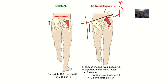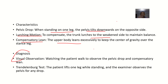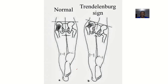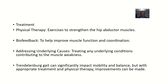Diagnosis involves visual observation of the patient walking to observe the pelvic drop and compensatory lean. The Trendelenburg sign or Trendelenburg test is also used: the patient lifts one leg while standing, and the examiner observes if there is a hip drop on the opposite side.